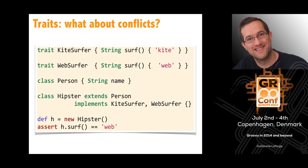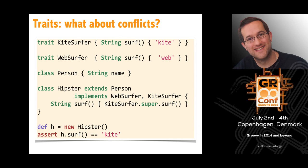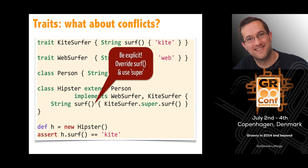If you want surf to return 'kite', you can swap the traits and put KiteSurfer last. Or you can be more explicit: override surf in Hipster and use the special syntax 'KiteSurfer.super.surf()' to decide which trait's surf is called — similar to what Java 8 does with default methods.